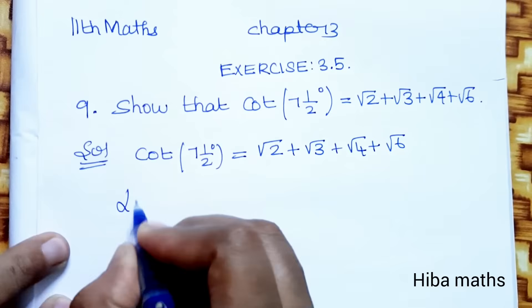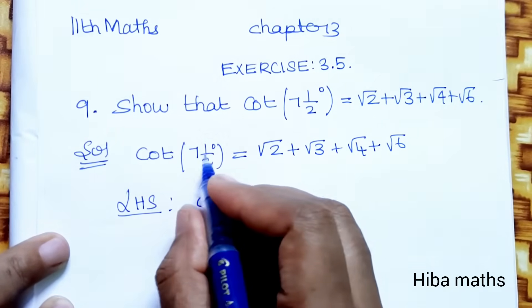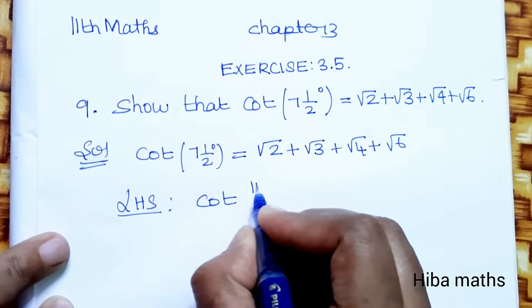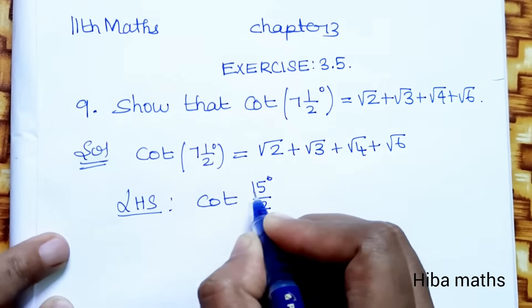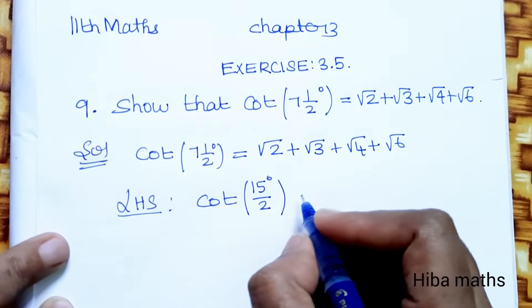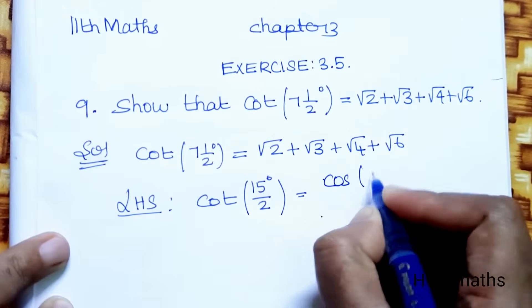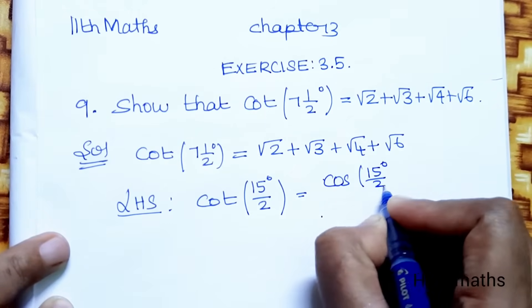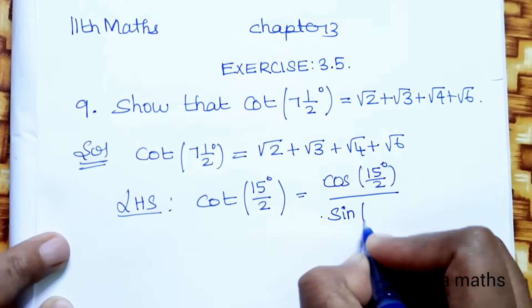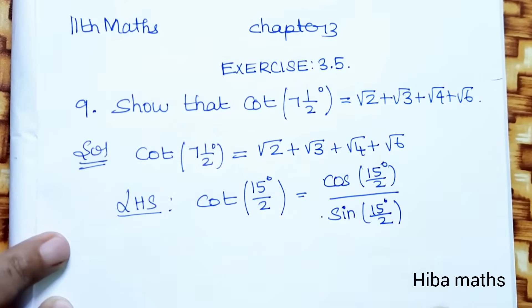First I will solve cot(7½°). Now, 7½ is 15/2 degrees. Cot is cos divided by sine, so cot(15/2°) = cos(15/2°) divided by sin(15/2°). Cos by sin is equal to cos by sin.